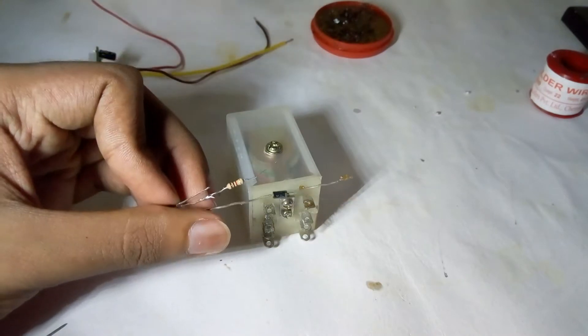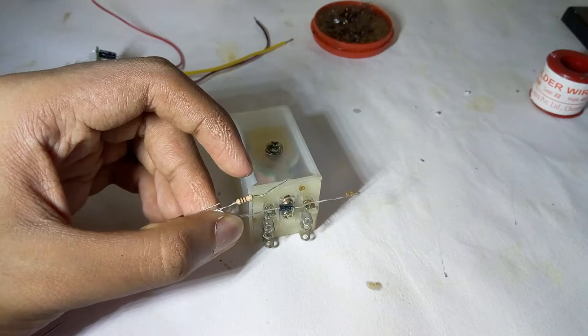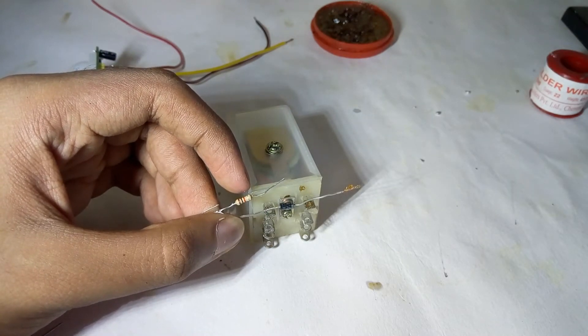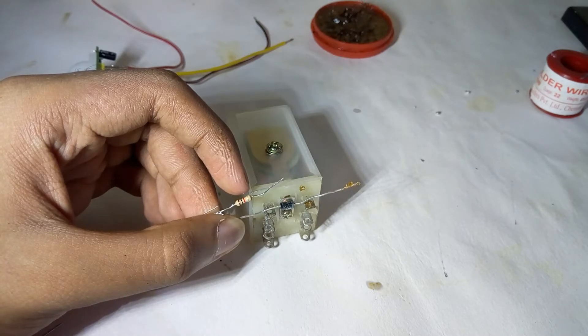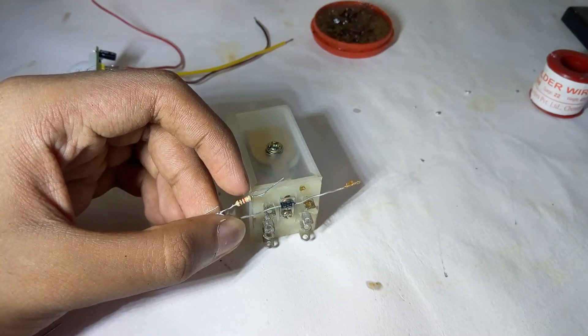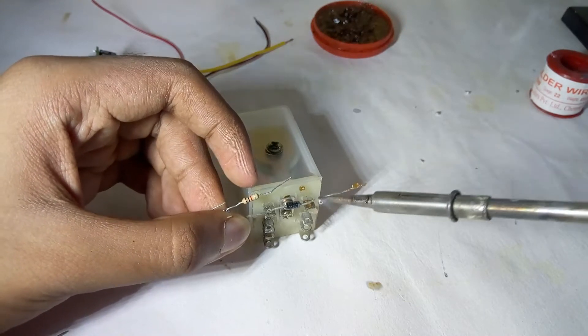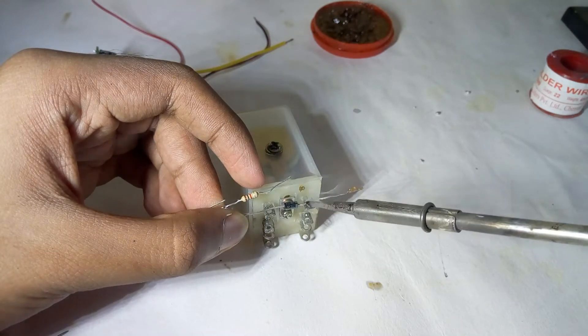A relay uses a small current to drive a large current. That is, we activate this relay with a small current and it acts as a switch. I will show you how it works. Connect the diode as shown.